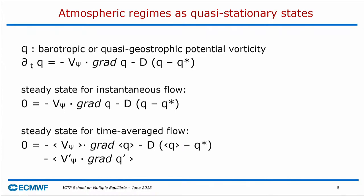The time derivative of potential vorticity is given by the advection of potential vorticity, and on the right-hand side there is a damping term D, which is basically a relaxation towards some equilibrium determined by a forcing term q-star. When we look for multiple equilibria we look for stationary states of this equation. From quasi-geostrophic theory, from potential vorticity you can derive the stream function, so once you know q the whole flow is determined.